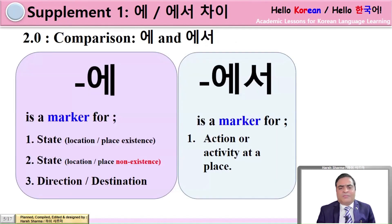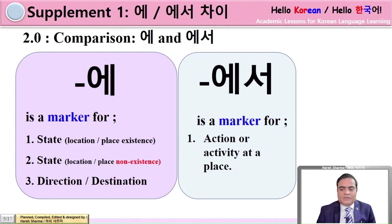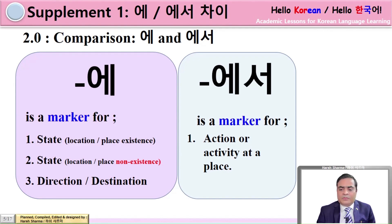Let's start the comparison of 에 and 에서. 에 is a marker for STATE — to show the location or place where something is existing or not existing. Point number one: location or place existence of an object or a human being. Similarly, number two: location or place non-existence. And number three: direction or destination. So to summarize, there are three major uses of 에 which we are going to compare in this lesson: to show existence, non-existence, and the destination.